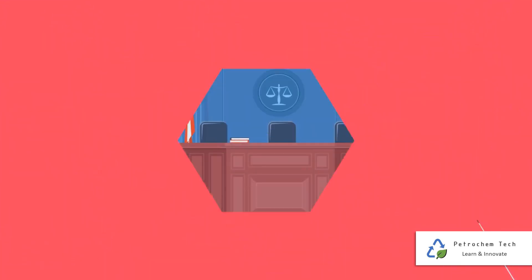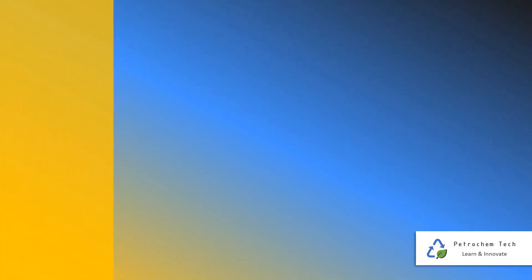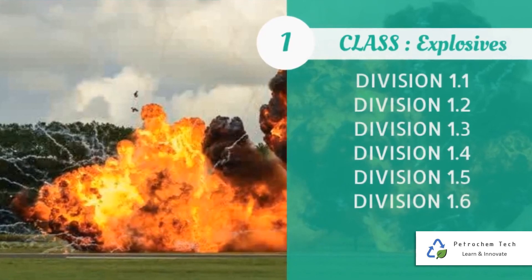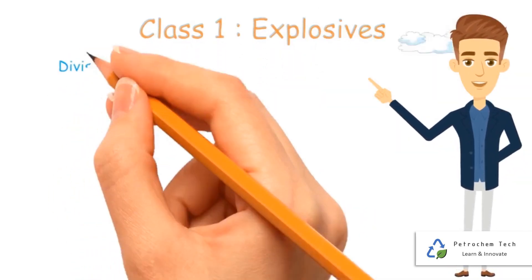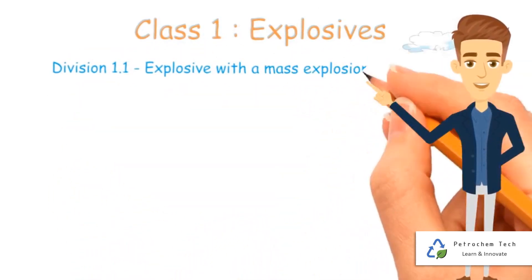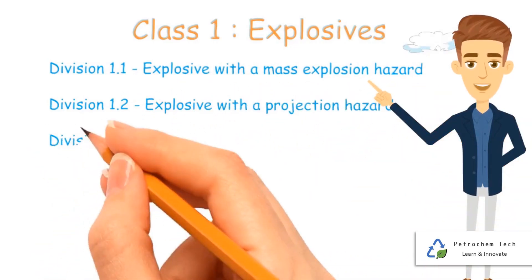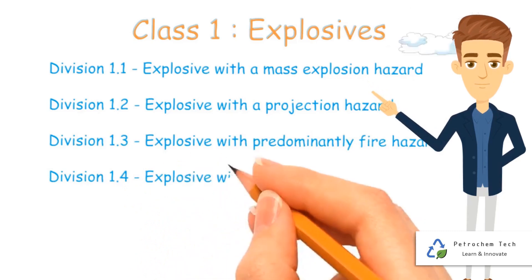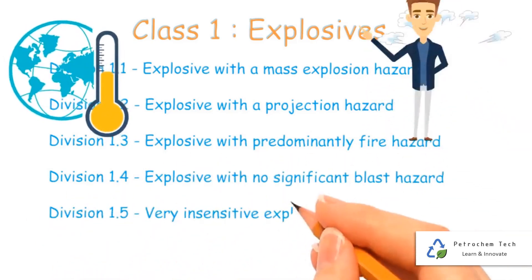The classification of chemical hazards as recommended by the UN Committee of Experts: Class 1 - Explosives, consisting of six divisions. An explosive or explosive material is a reactive substance that contains a great amount of potential energy that can produce an explosion if released suddenly, usually accompanied by the production of light, heat, sound, and pressure.